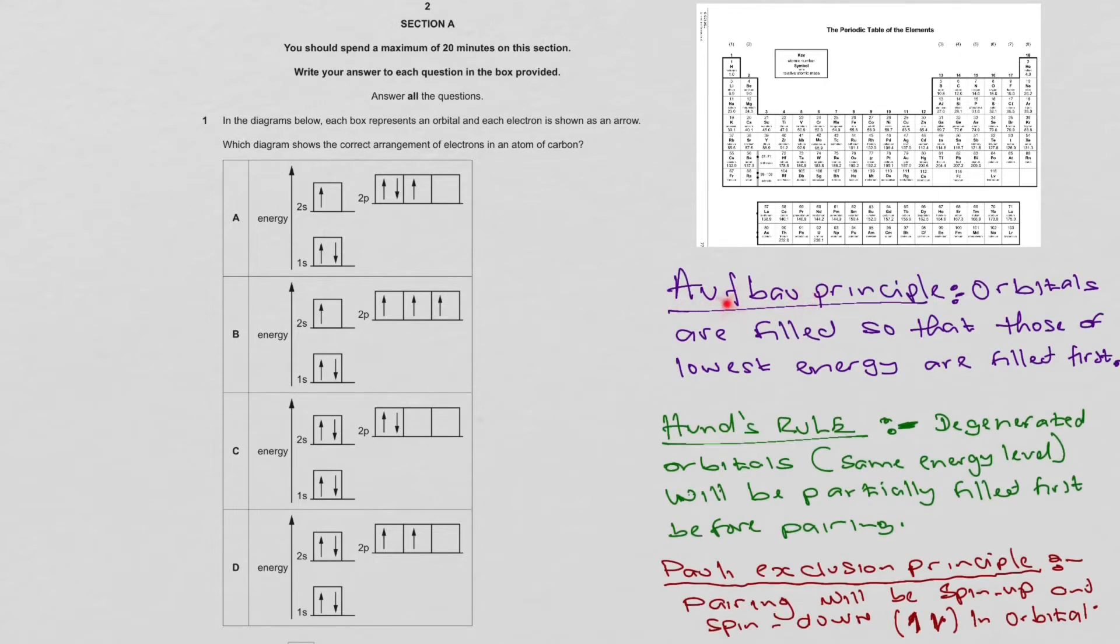In filling the orbitals, we have to follow the Aufbau principle, Hund's rule, and Pauli exclusion principle. The Aufbau principle states that the lowest energy level will be filled first before the next energy level. That's the Aufbau principle.